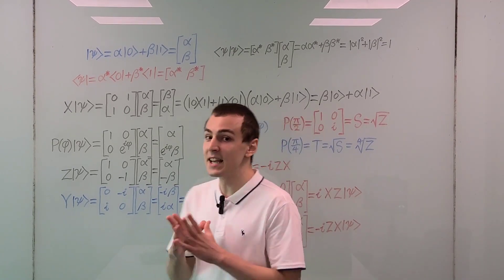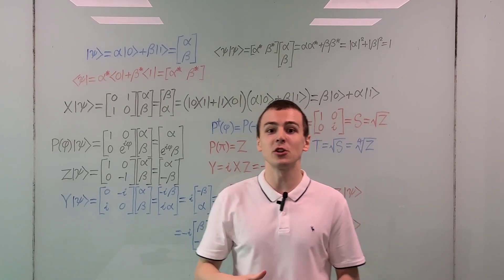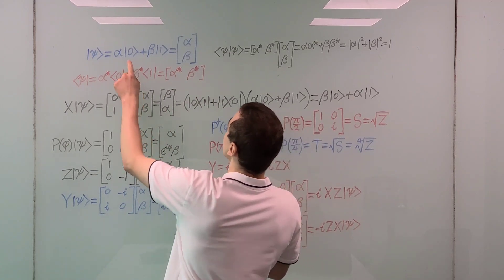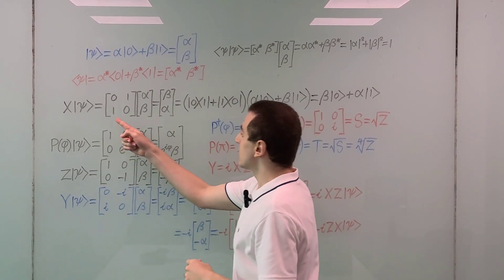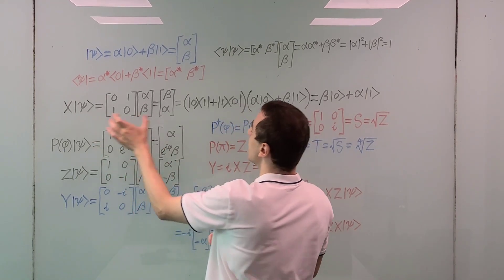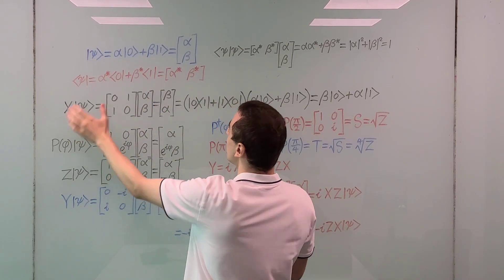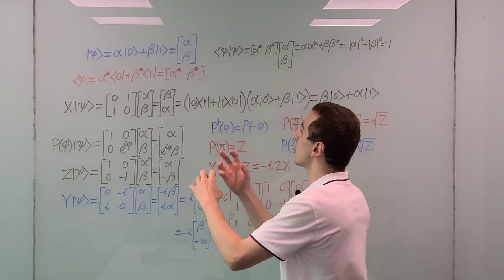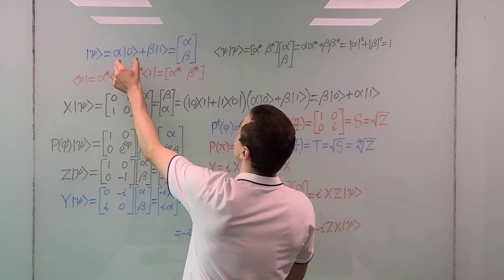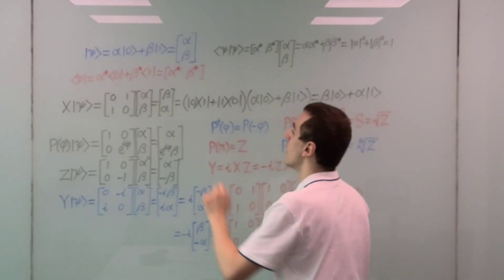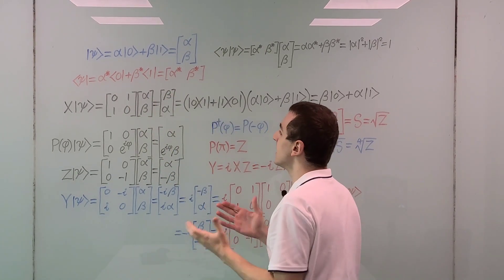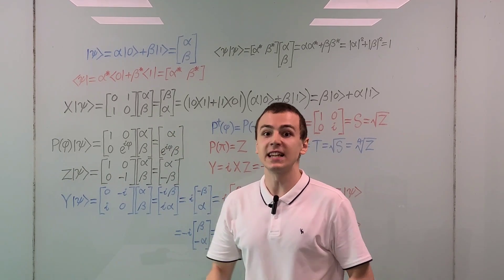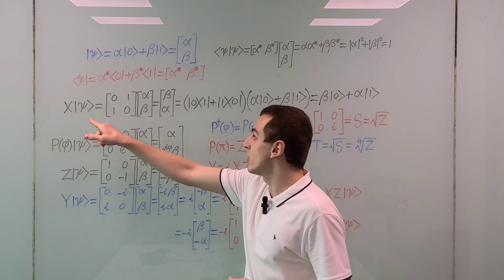The Pauli X operator is analogous to the classical NOT gate, so sometimes it's called a bit flip because it flips the basis states — it flips the zero and the one. This matrix is the Pauli X matrix applied to a general state. The effect of this matrix multiplication is to swap the coefficients: alpha and beta swap places. Alpha was the coefficient of the ground state and beta the excited state, but now the coefficients have swapped roles. This is a very common procedure in modeling quantum mechanical systems, and in fact, errors are usually modeled as bit flips because this is a very common type of error.